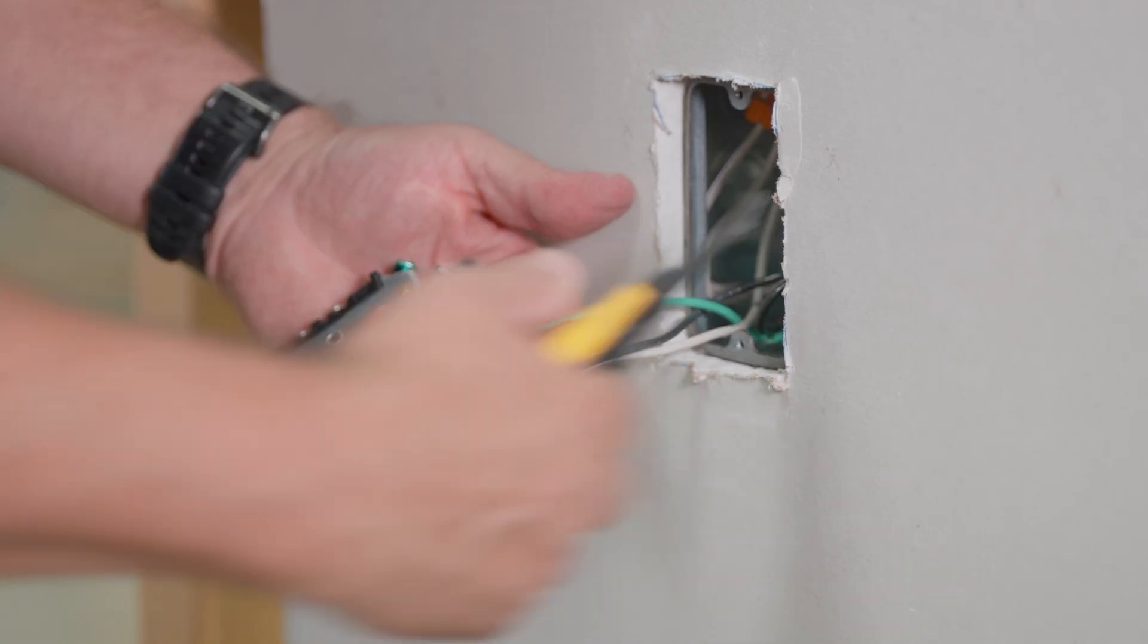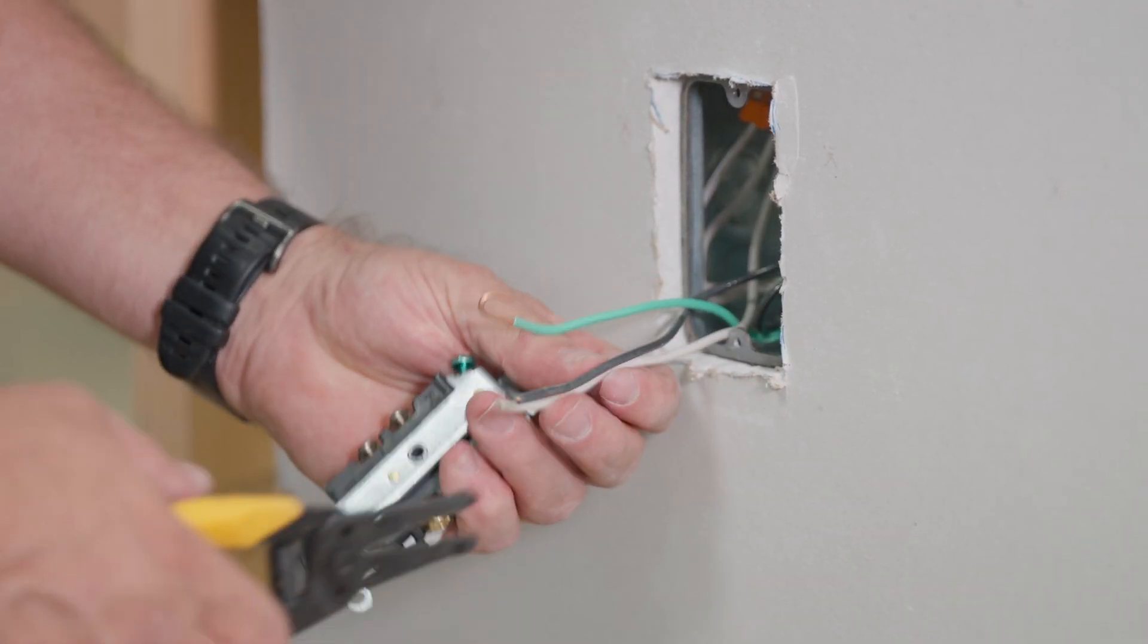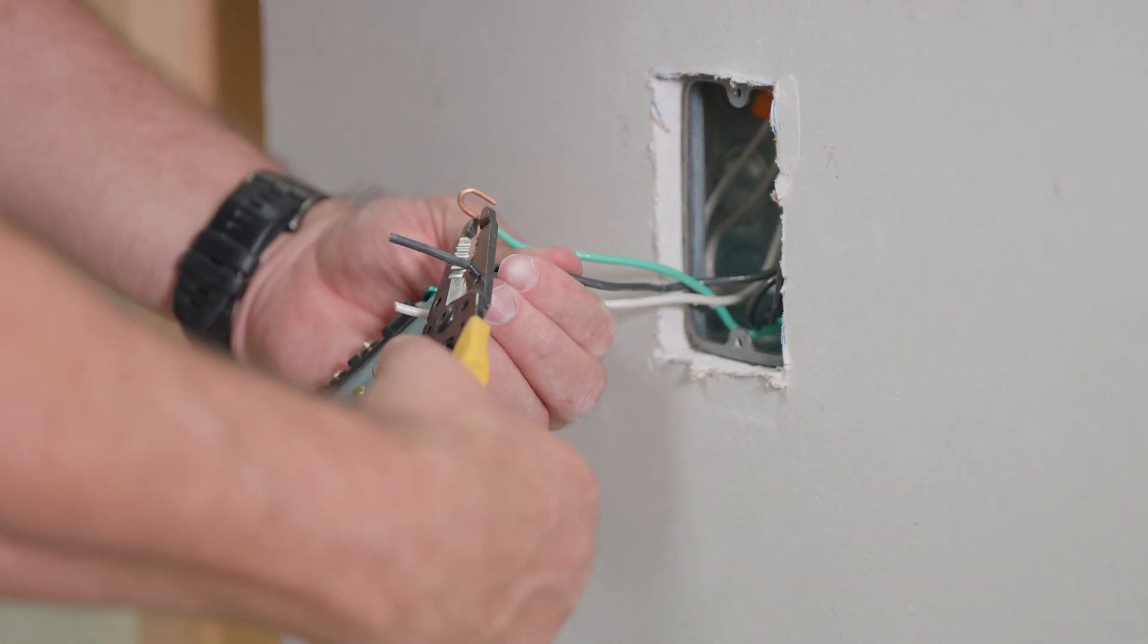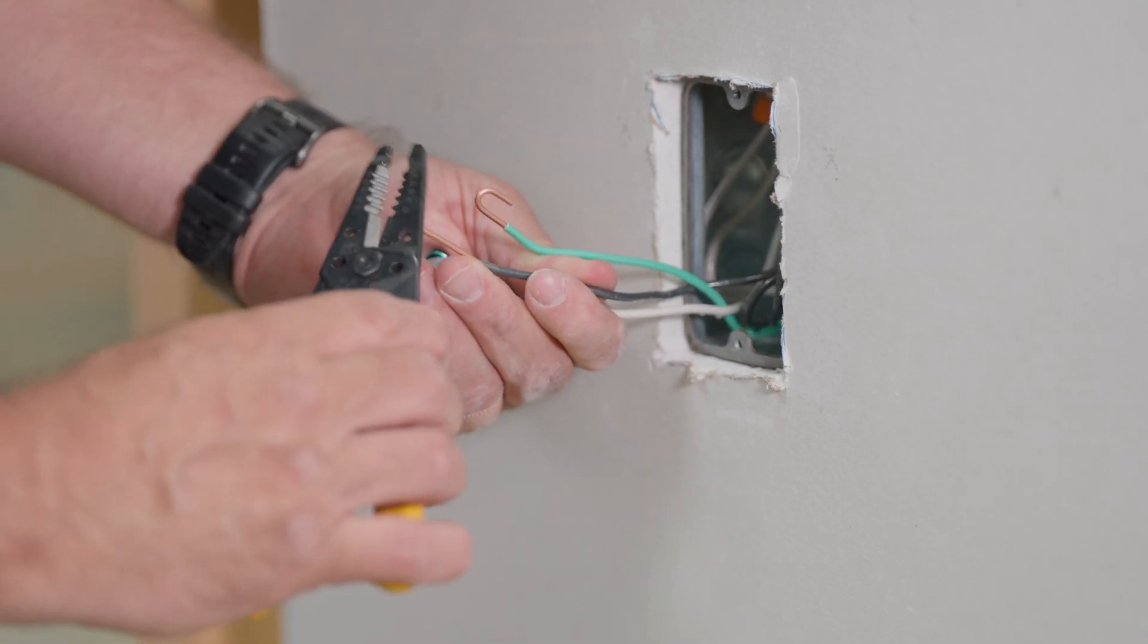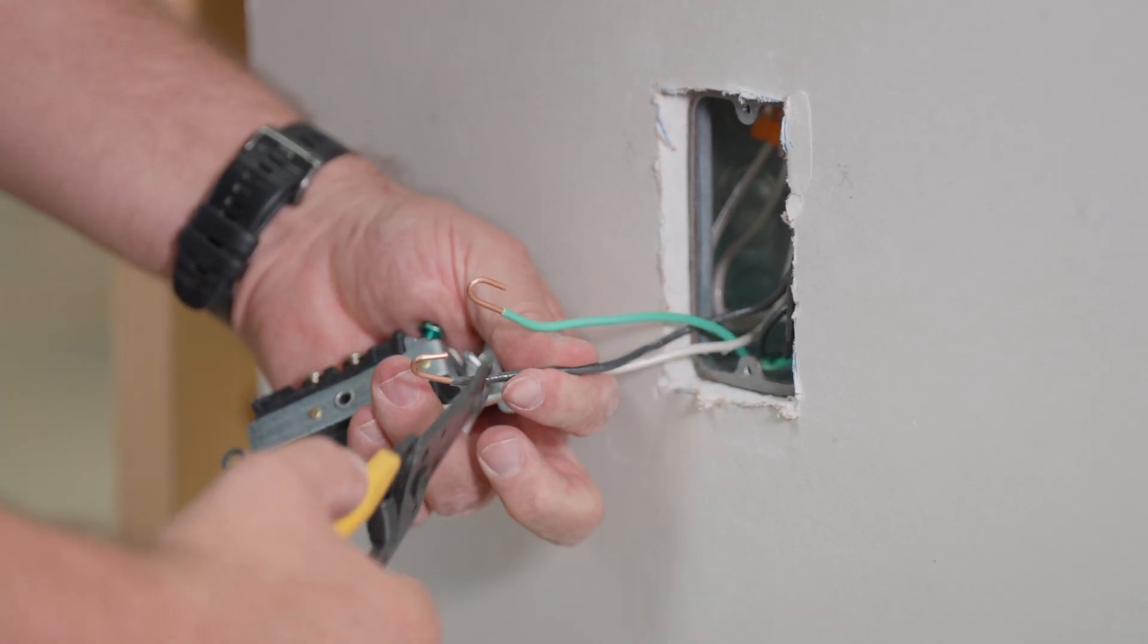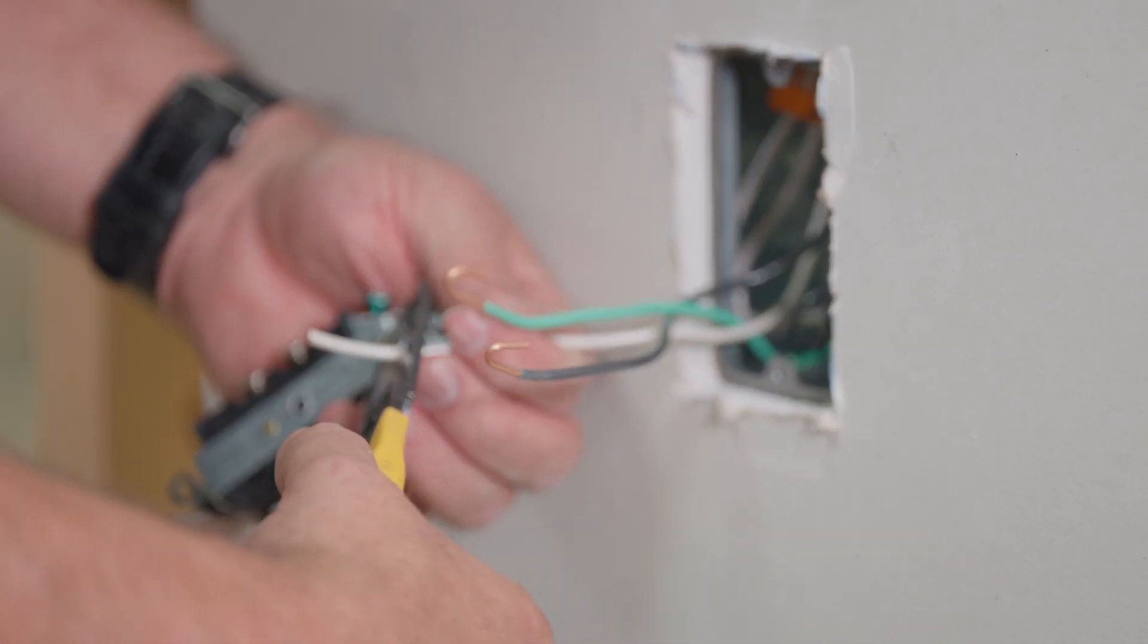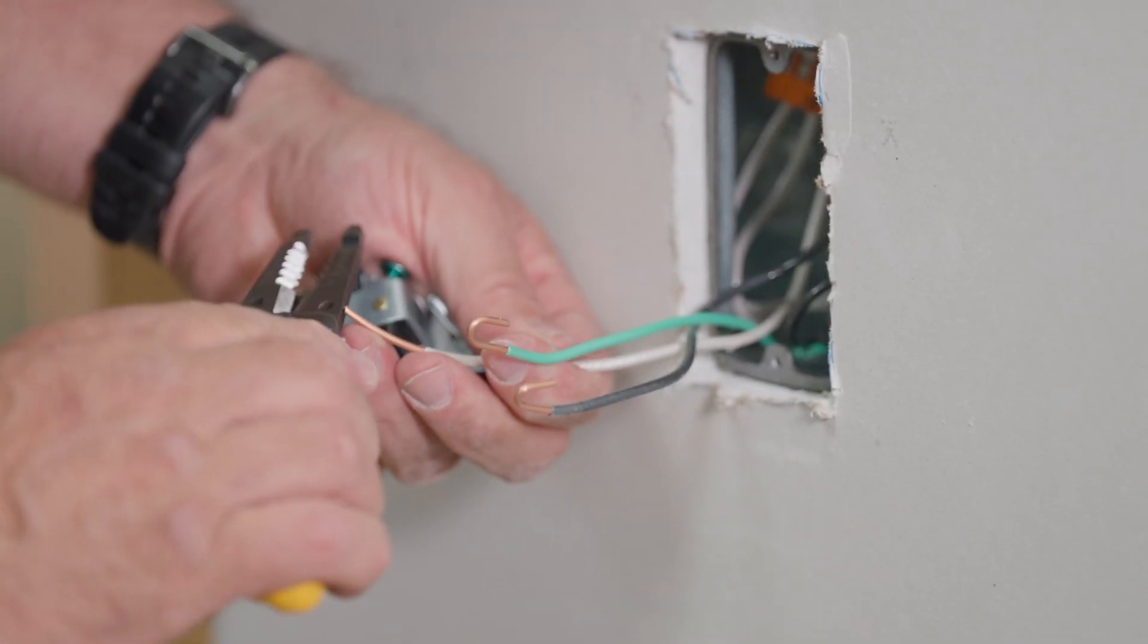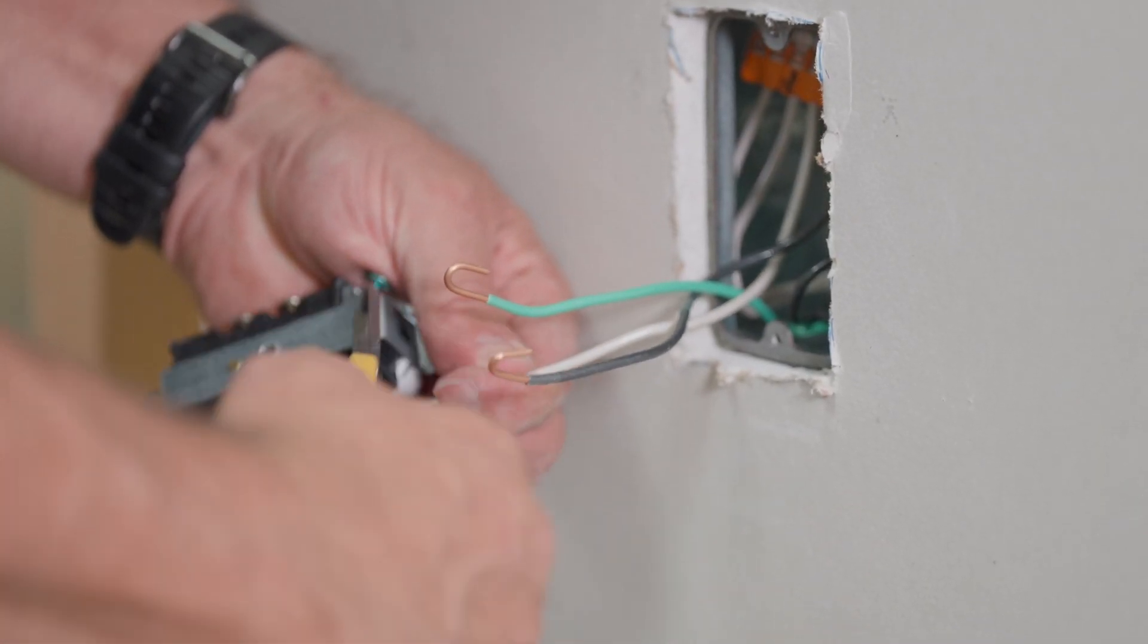We're going to do that for all three conductors. Strip it, make a loop, and strip it and make a loop just like that.